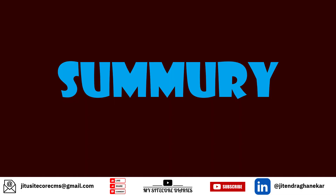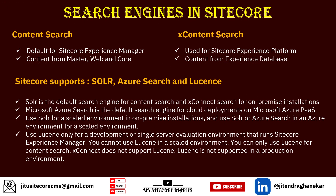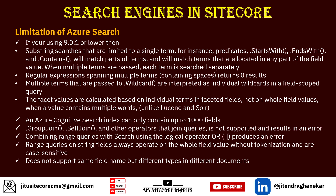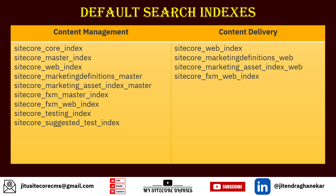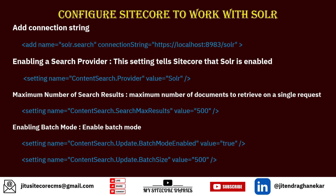We are done for today's video. Let's summarize what we've covered. There are two types of search: content search used in Experience Manager, and XConnect search used in Experience Platform. Sitecore has three default search engines: Solr, Azure Search, and Lucene. For on-premise Sitecore, Solr is the default; for Sitecore PaaS, Azure Search is the default. Azure Search has some limitations so be careful using it — you can also use Solr on PaaS. We've run through the default indexes and which indexes are stored in CM and CD roles. Finally, we've seen the configuration settings required to run Sitecore with Solr.